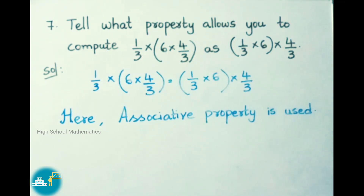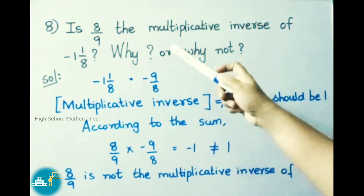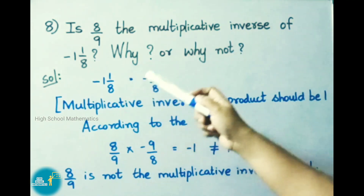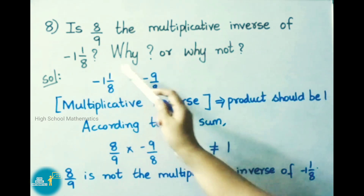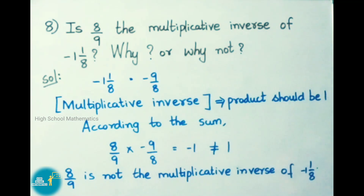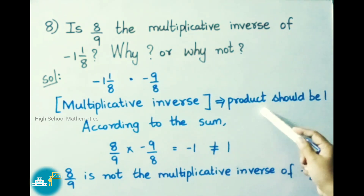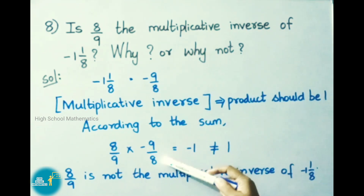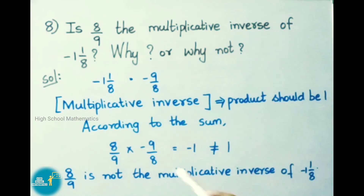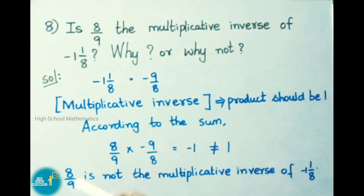Question number 8: Is 8/9 the multiplicative inverse of -1⅛? -1⅛ means -(8+1)/8 = -9/8. For multiplicative inverse, the product should be 1. But 8/9 × -9/8 = -1, which is not equal to 1. Therefore 8/9 is not the multiplicative inverse of -1⅛.